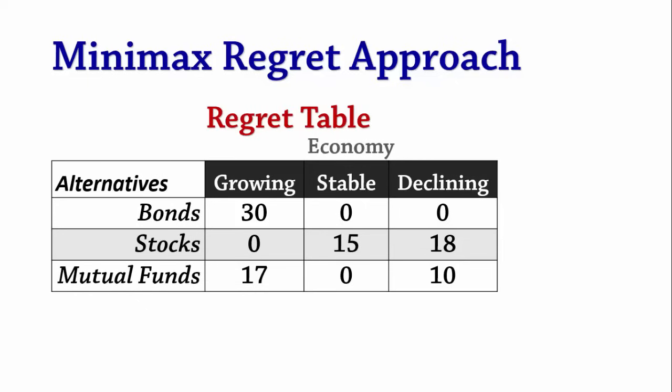Here is the regret table. Since the decision is to be made based on minimax regret, we first determine the maximum regret for each alternative and then choose the minimum. For bonds, the maximum regret is 30. For stocks, it is 18. And for mutual funds, it is 17. The minimum of these maximum regrets is 17. The decision is to invest in mutual funds.